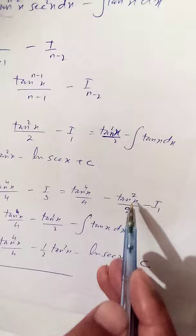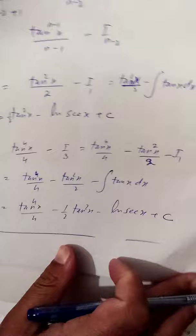I₃ gives tan²x over 2 minus I₁. The integration of tanx is equal to natural log of |secx|.